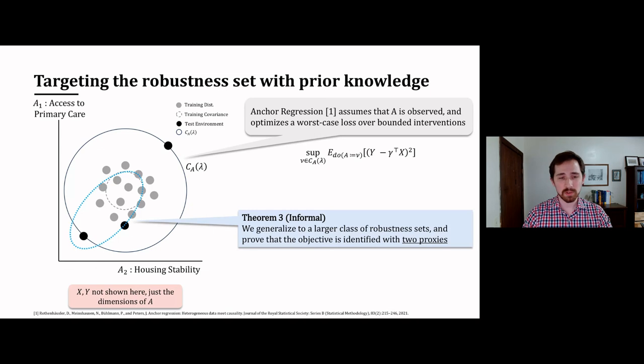We also show how to extend all of these results, including recovery with two proxies, to more general robustness sets, such as the one shown here on the bottom left.